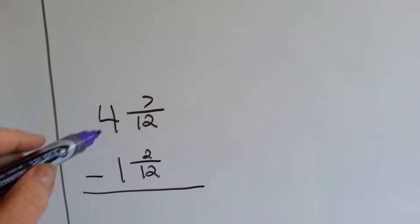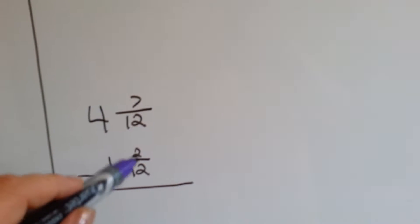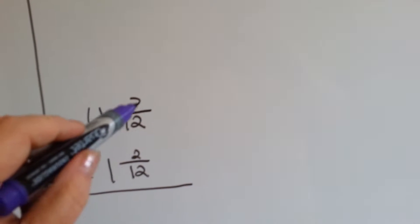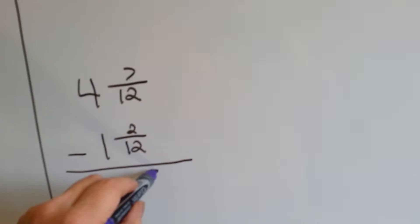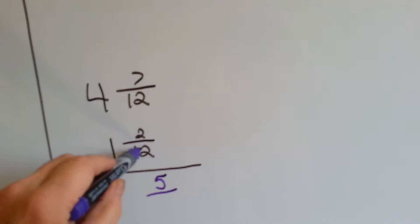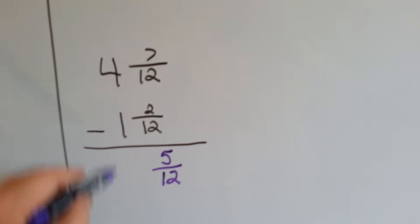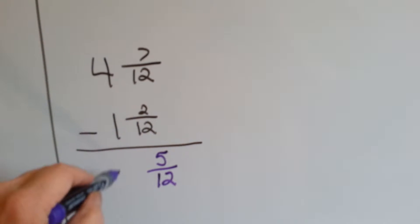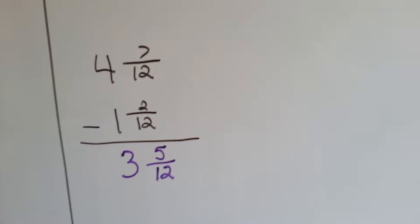Okay, let's try another one. 4 and 7 twelfths minus 1 and 2 twelfths. 7 twelfths minus 2 twelfths, 7 minus 2 is 5. The 12 is our denominator, so we just put it down. Then we do 4 minus 1, which is 3. Our answer is 3 and 5 twelfths.